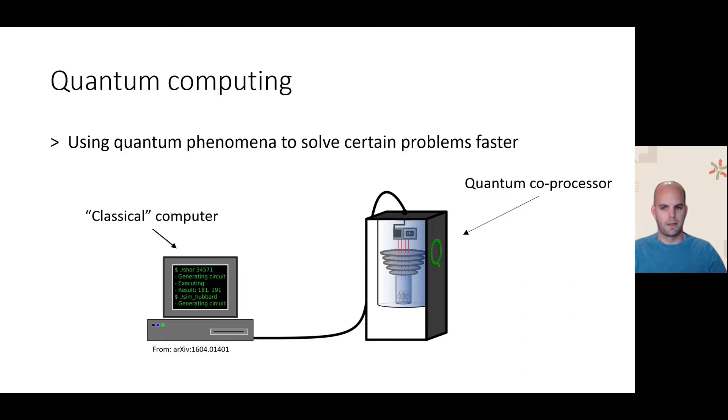While running the quantum program, the classical computer sends instructions to the quantum coprocessor. After executing these quantum instructions, the quantum coprocessor responds with the result of measuring one or multiple qubits. The classical computer can then use these measurement outcomes to decide what quantum instructions to perform next.